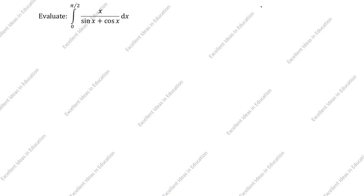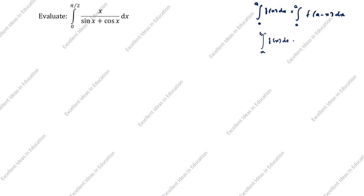We use the property: the integral from 0 to a of f(x) dx equals the integral from 0 to a of f(a - x) dx. Also, the integral from a to b of f(x) dx equals the integral from a to b of f(a + b - x) dx.